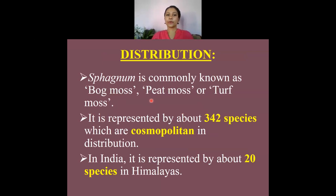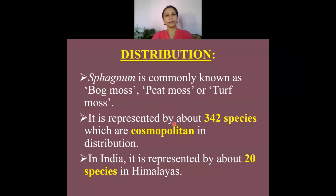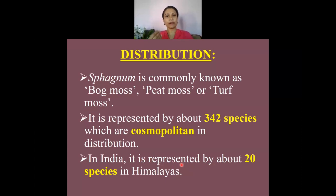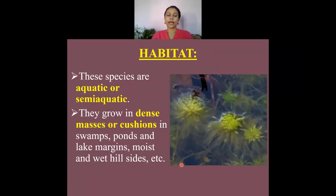Sphagnum is commonly known as bog moss, peat moss, or turf moss because of its ecologically important character. It is represented by about 342 different species which are cosmopolitan in distribution and found all over the world. In India, it is represented by about 20 different species, mostly confined to the Himalayan region.